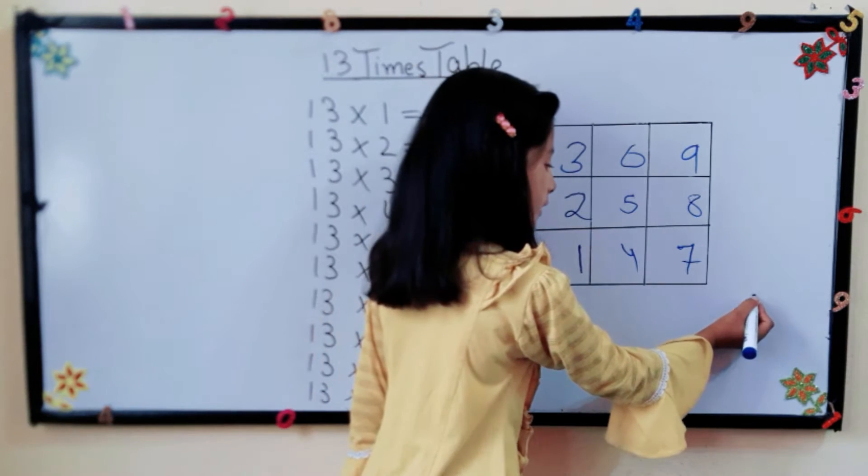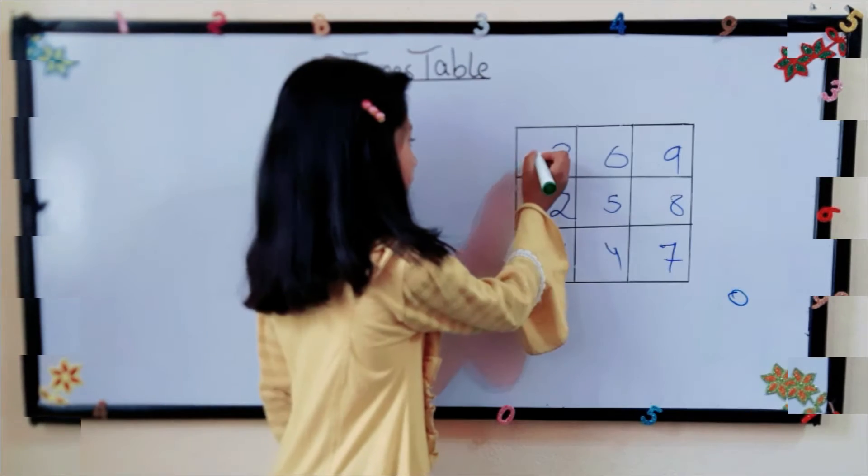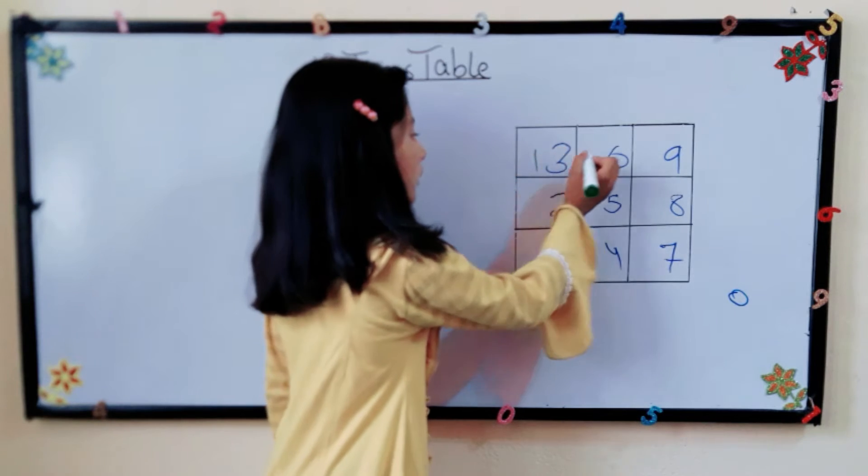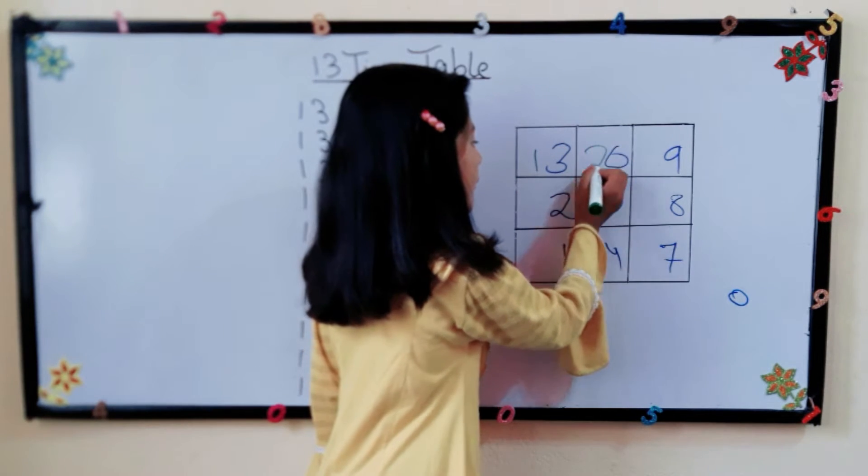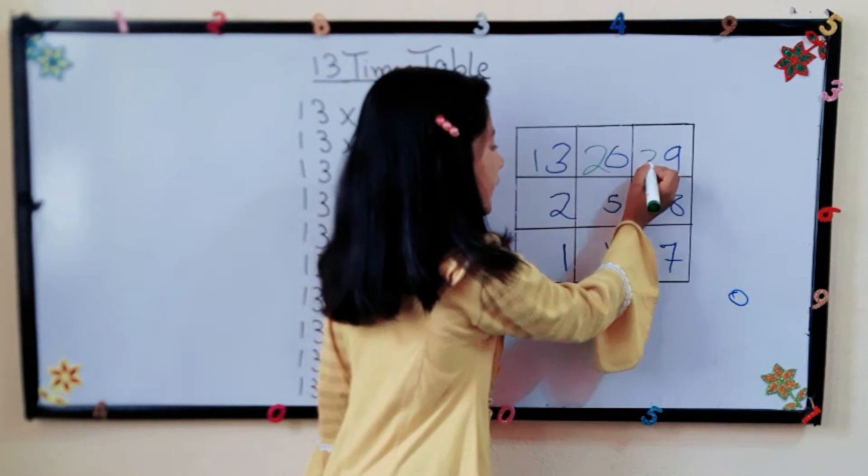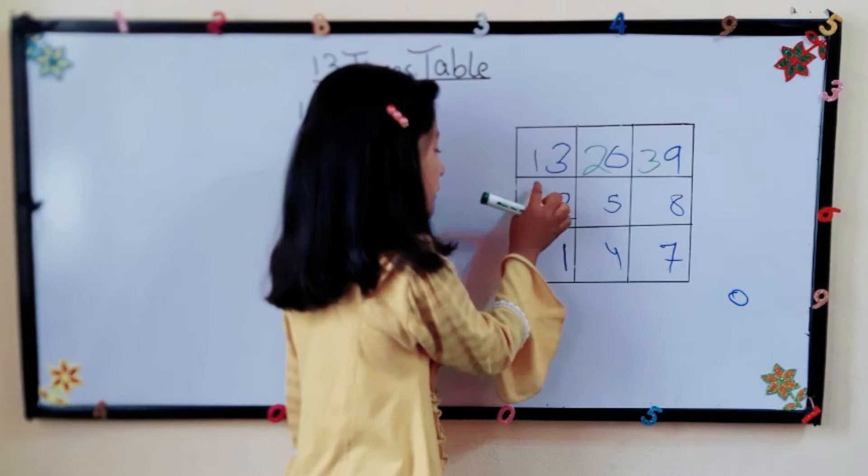Here we will write 0, here we will write 1, 2, 3, 4. We will skip it.